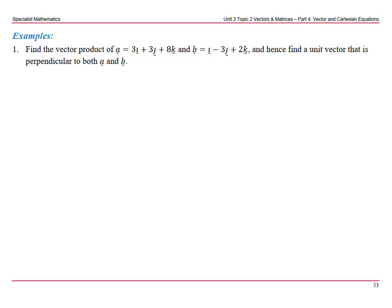Another example of using determinants to find the cross product. This one says find a unit vector that is perpendicular to both a and b. So let's start by finding our cross product.